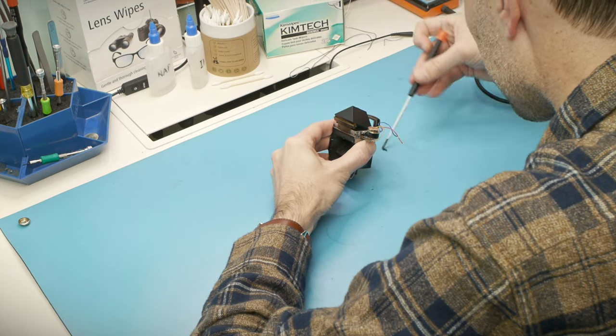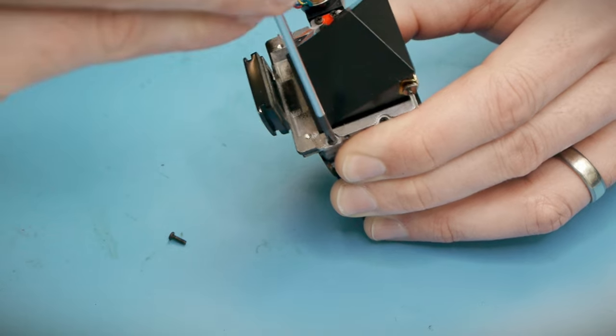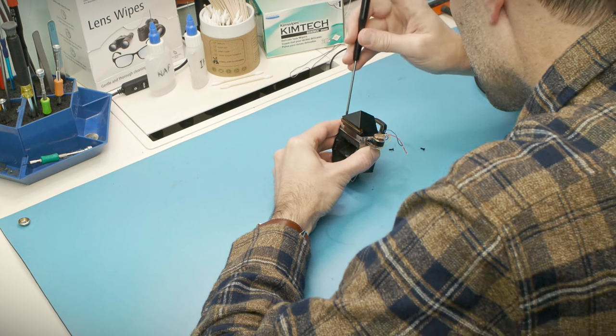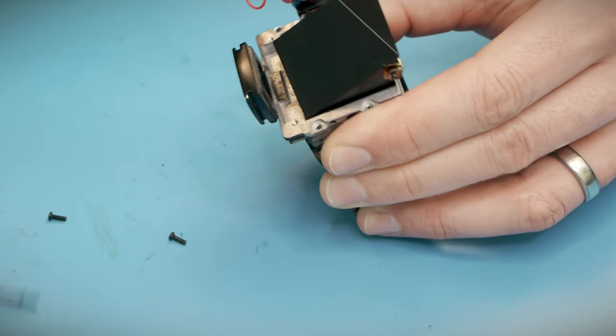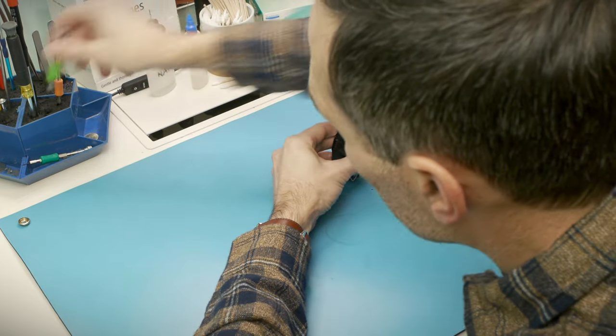I'm going to start off by separating the prism assembly from the rest of the mirror box. This sub-assembly includes the galvanometer, the focusing screen, a Fresnel lens for the focusing screen, and the big pentaprism right on top. All that stuff will come away by removing these four screws.